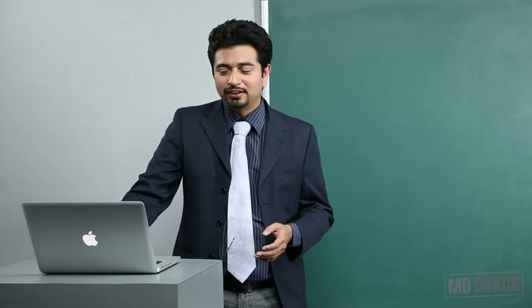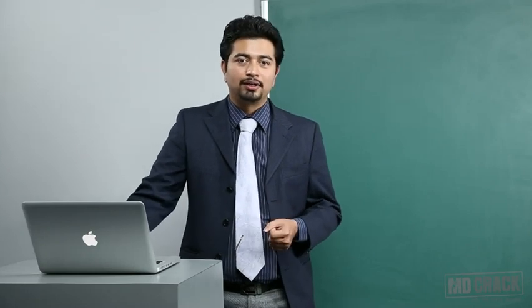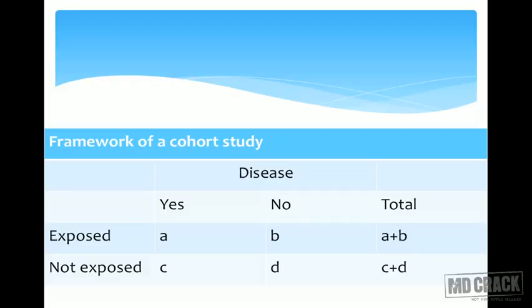Last but not least, you can only attempt a cohort study when you have ample funds at your disposal, as it is a very expensive design. Looking at the cohort study framework: unlike case-control, we are not dealing with cases and controls here. We have persons who are exposed (represented as a+b) and persons who are not exposed (represented as c+d). Remember the sequence a, b, c, d — mixing it up will make all your formulas go wrong.